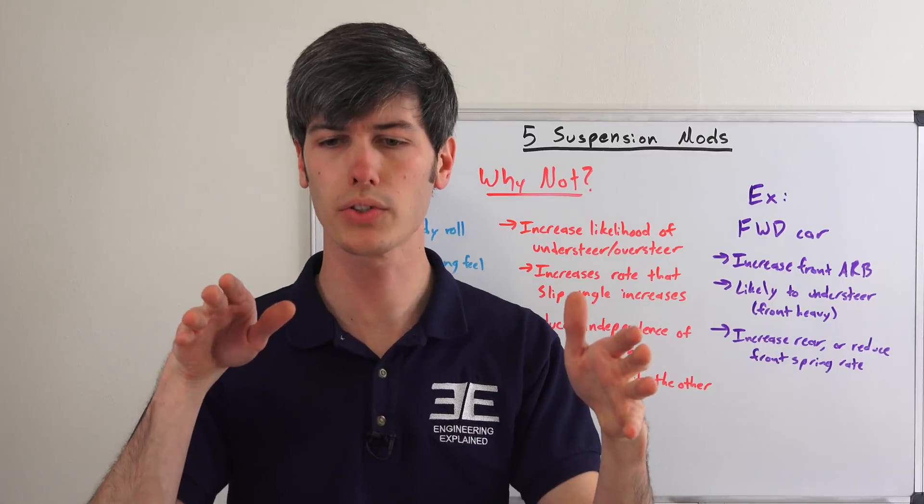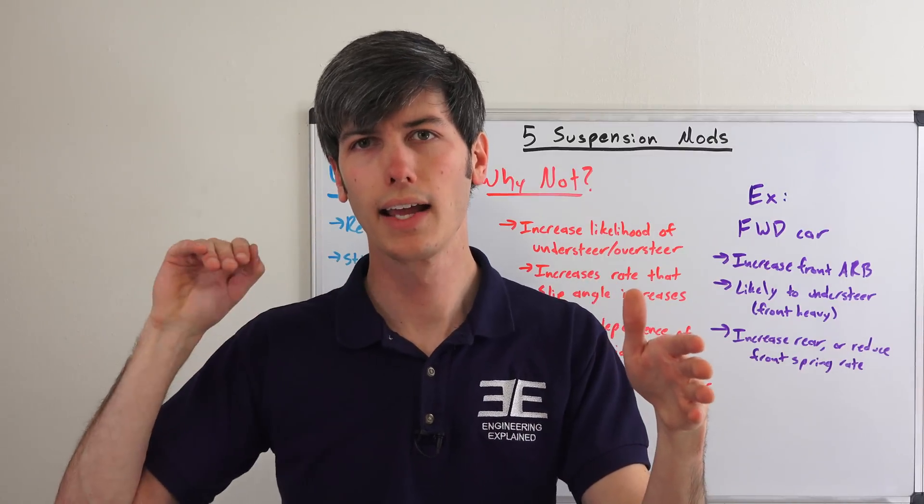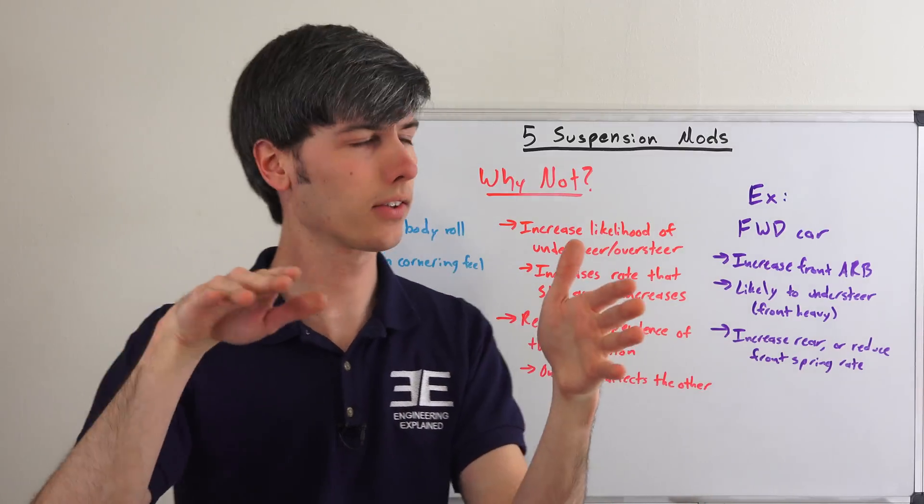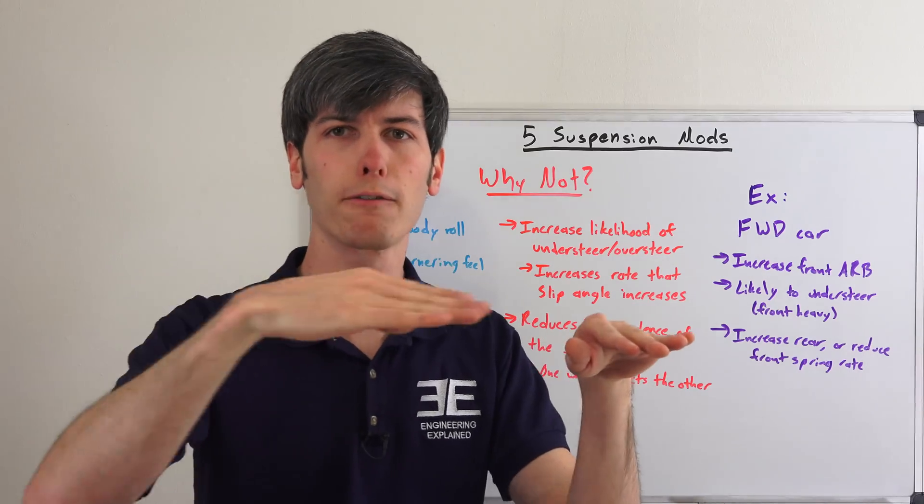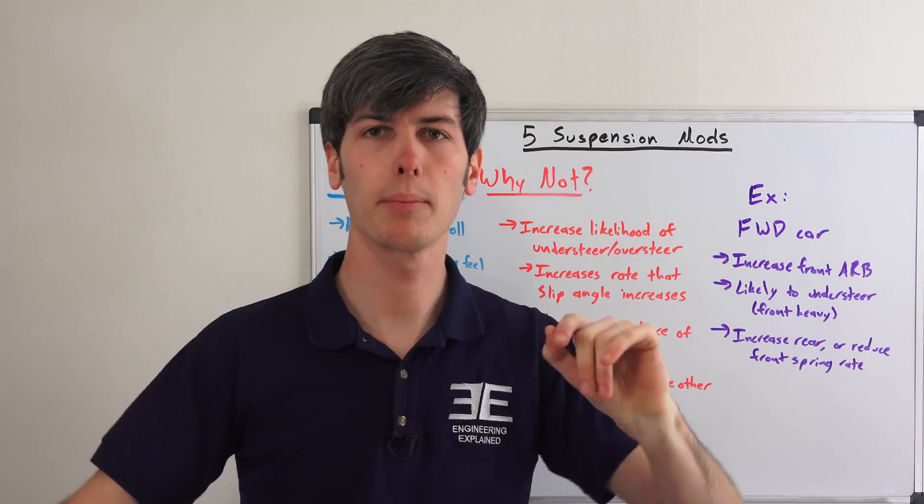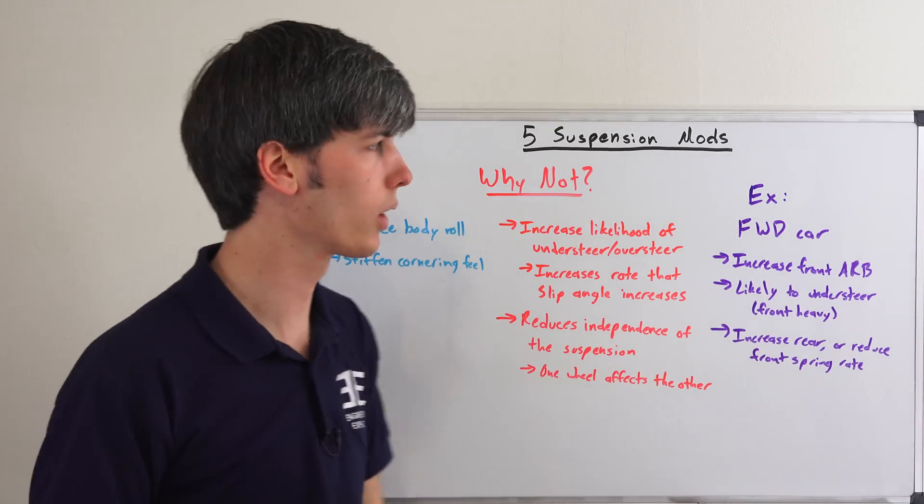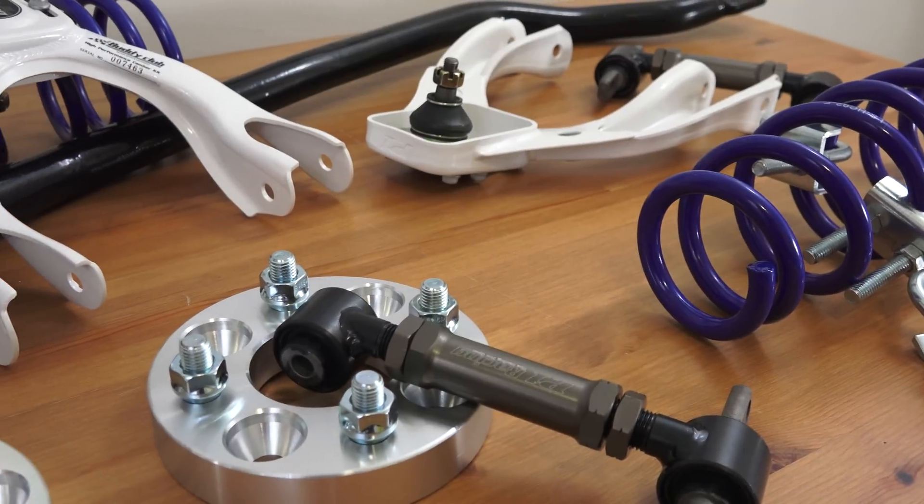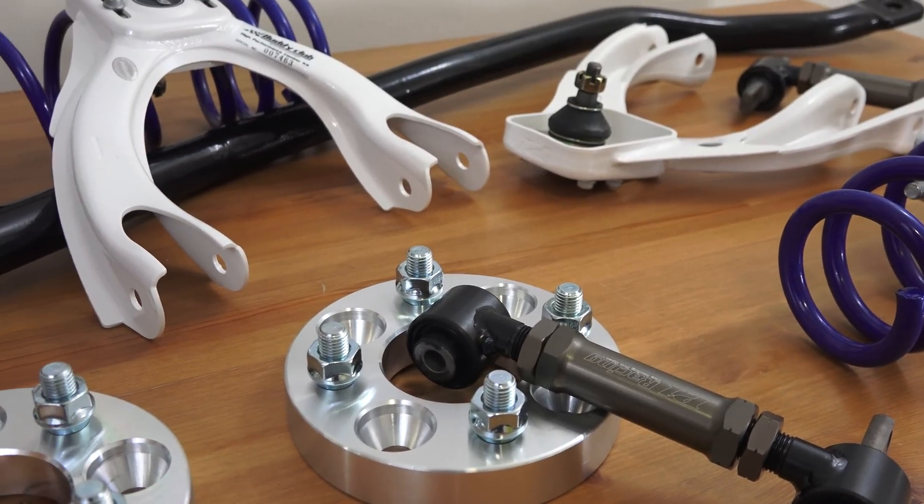But what you're doing with an anti-roll bar is you're linking those two wheels of that axle, and so whatever happens to one tire affects the other tire. If you're going over just a curb on the right side and you hit that curb, like let's say on a track, well that's going to send that force as that wheel moves up to the other wheel.